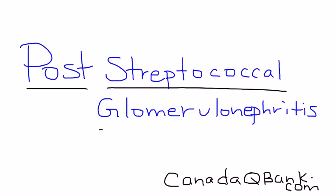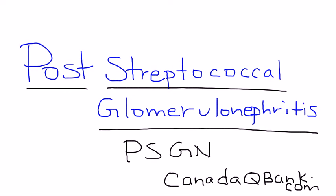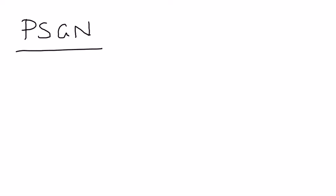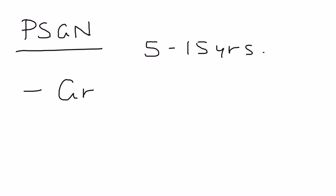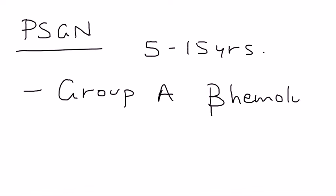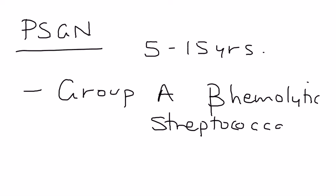Post-streptococcal glomerulonephritis, abbreviated PSGN, is the most common type of glomerulonephritis in children, usually affecting patients between 5 to 15 years of age. The causative pathogen is group A beta-hemolytic strep, also known as Strep pyogenes.